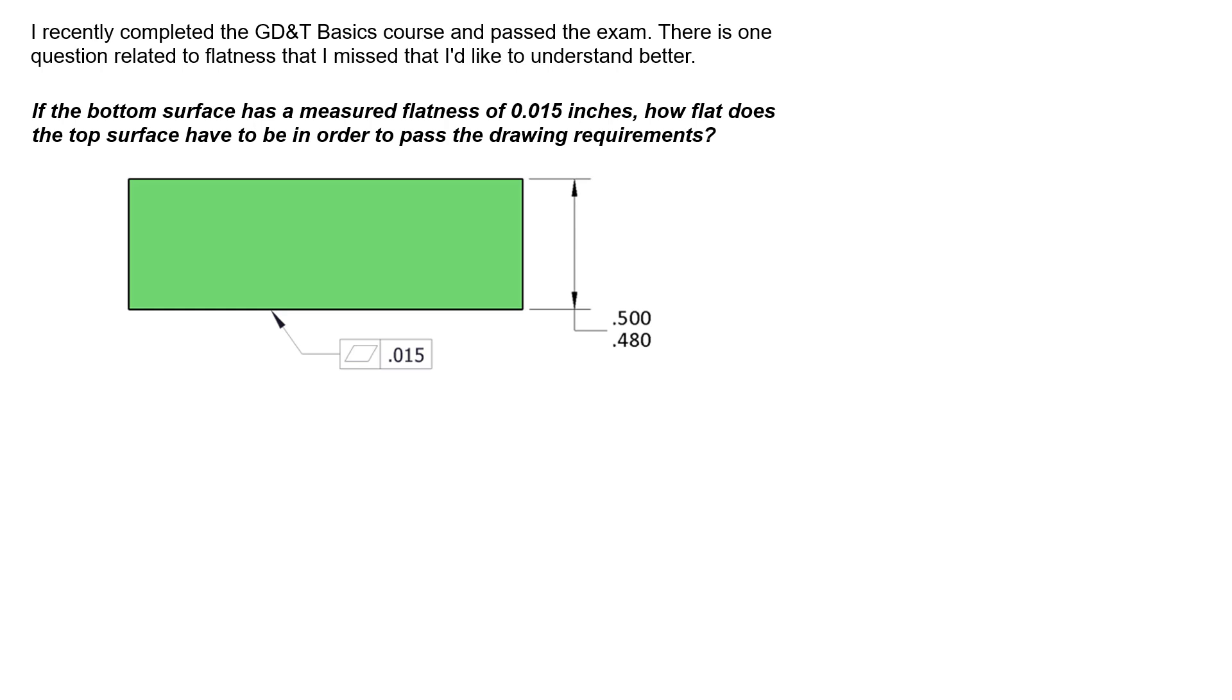We also have a size tolerance of 0.500 to 0.480 for the width of this feature of size. Now if we draw an example here, we see that we have some form error, obviously exaggerated a little bit. But we know that any local size has to be within 0.480 and 0.500.